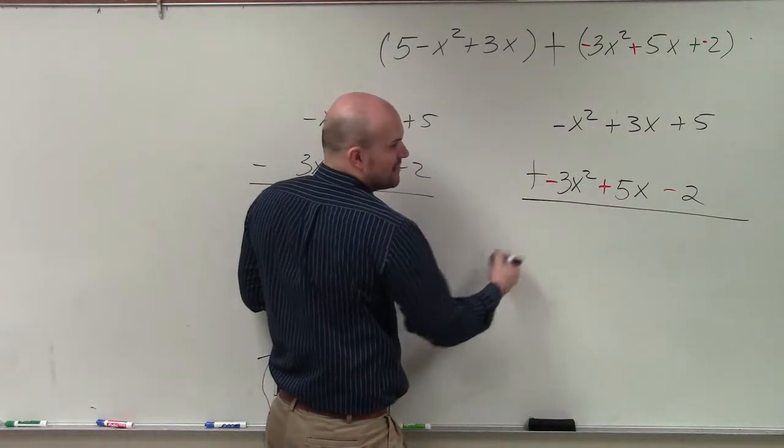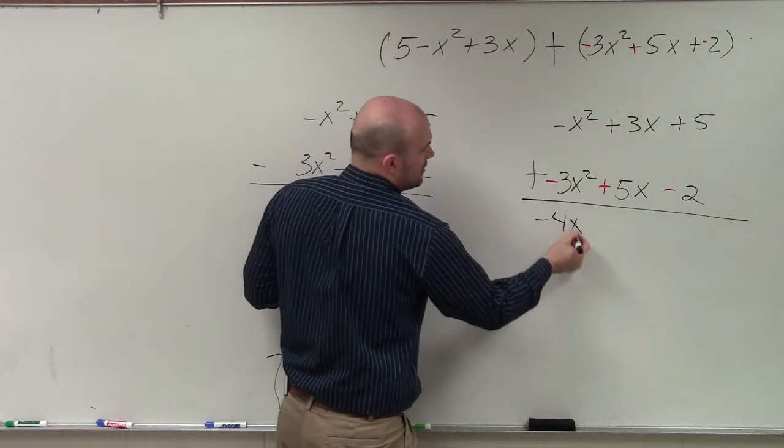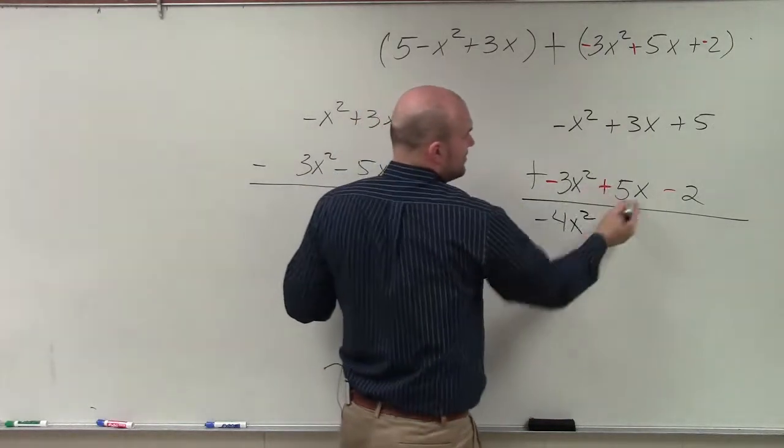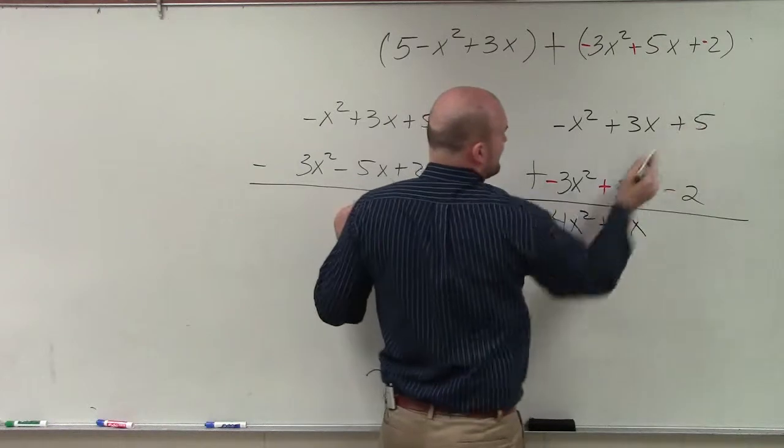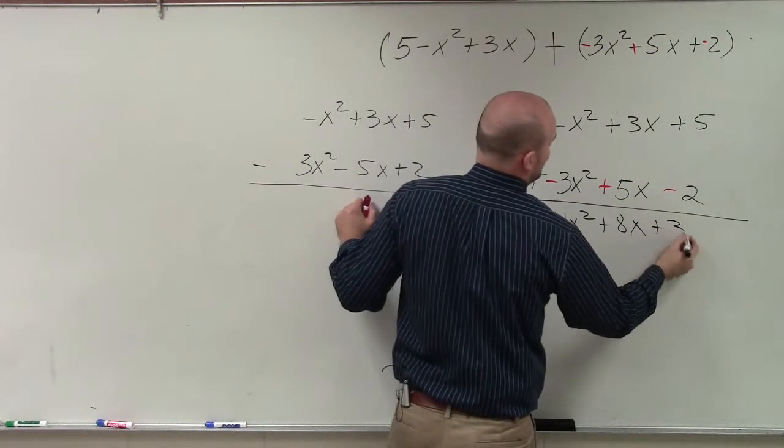what's -x² + (-3x²)? -4x². 3x + 5x is 8x. 5 + (-2) is positive 3.